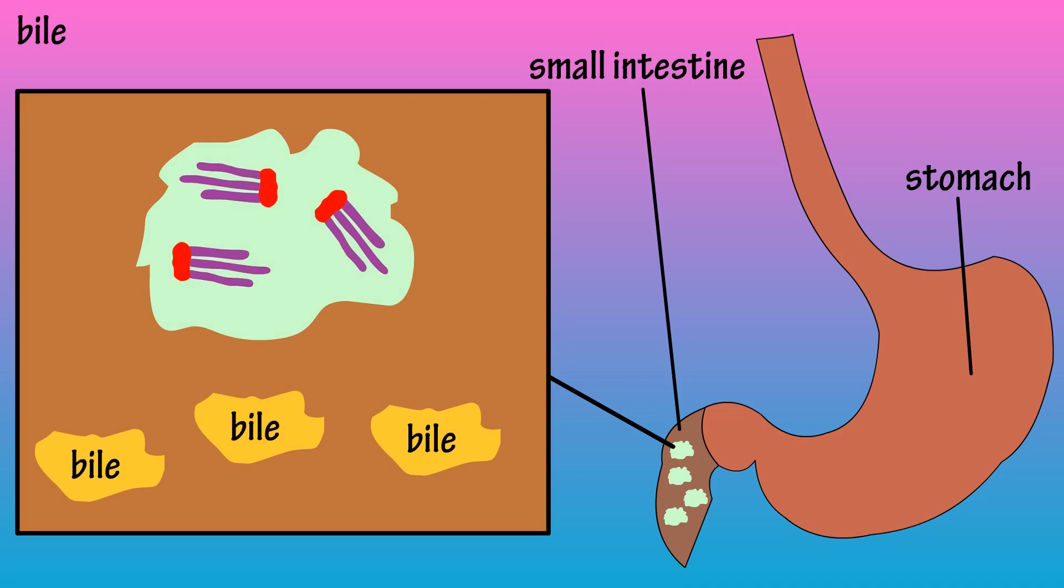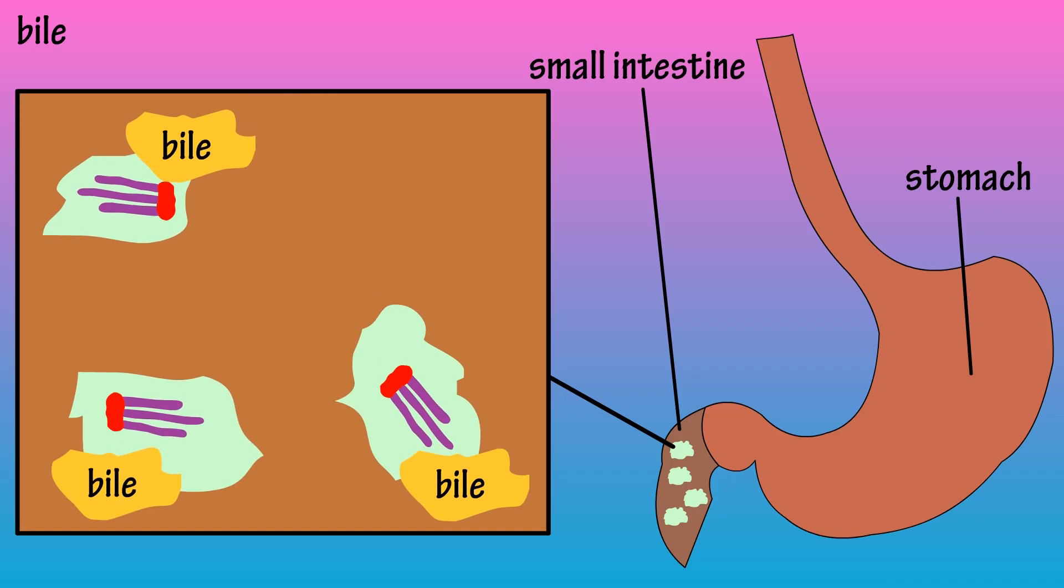Bile is released into the small intestine and it is able to mix with the large fat droplets. Bile contains bile salts which allow it to emulsify the fat or break it down into smaller droplets.